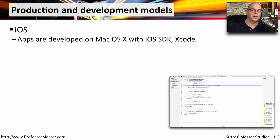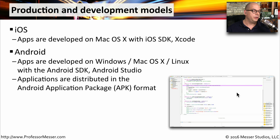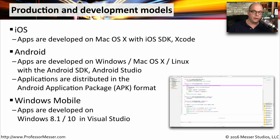Building applications in these mobile operating systems have many similarities across the different OSes, but there are some specific differences. Applications for iOS are written on the Mac OS X operating system, and you would need Apple's iOS software developers kit called Xcode. You have a bit more flexibility with Android. You can create applications on Windows, Mac OS X, and Linux by using the Android software developers kit, or Android Studio. Once you create these applications, they are distributed in a standard format called the Android Application Package, or APK. And for Windows Mobile, you would write all of your applications on a Windows 8.1 or Windows 10 desktop using Microsoft's Visual Studio.